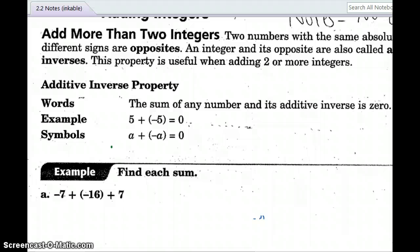On the back, it says add more than two integers, two numbers with the same absolute value, but different signs. In other words, they're the same distance from zero, but they have opposite signs. They are called opposites. An integer and its opposite are called additive inverses.